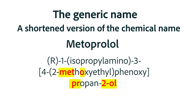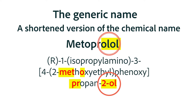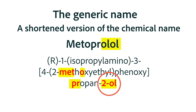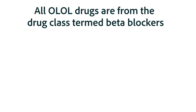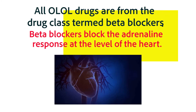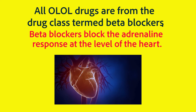Many drugs have a suffix that will tell us a lot about the medication. For instance, the suffix for metoprolol is -olol. The way we got the -olol was from the 2-ol portion of the chemical name. So any drug that has that particular suffix shares a portion of the chemical name — and if a portion of the chemical structure is the same, the drugs tend to have similar actions. Indeed, all -olol drugs are from the drug class known as beta blockers, and beta blockers slow down the heart and therefore decrease the blood pressure. Every beta blocker slows down the heart and decreases the blood pressure.